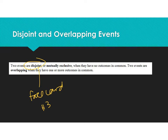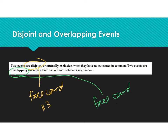On the other hand, we have what is called overlapping — that is when you have one or more outcomes in common. From a deck of cards, could I draw a face card and a heart at the same time? Yes, I could. So that's an overlapping event, and we find these probabilities a little bit differently than what we did previously in 10-2.